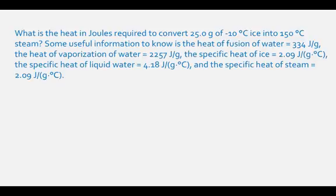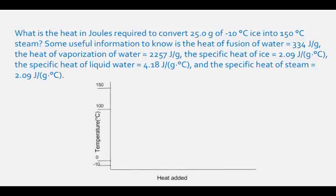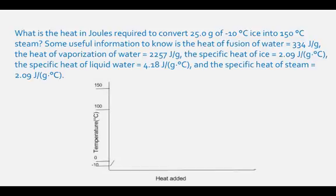First, it might be helpful to understand what is happening by viewing a heating curve. A heating curve has temperature on the vertical axis and heat energy put into the system on the horizontal axis. If we start at negative 10 degrees Celsius, the temperature will increase until we get to the water's melting temperature, and we'll need to calculate the heat energy required for this transition.